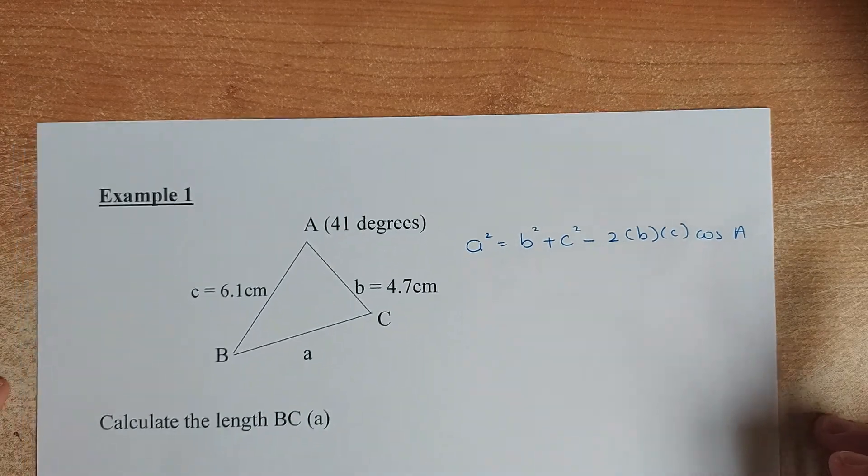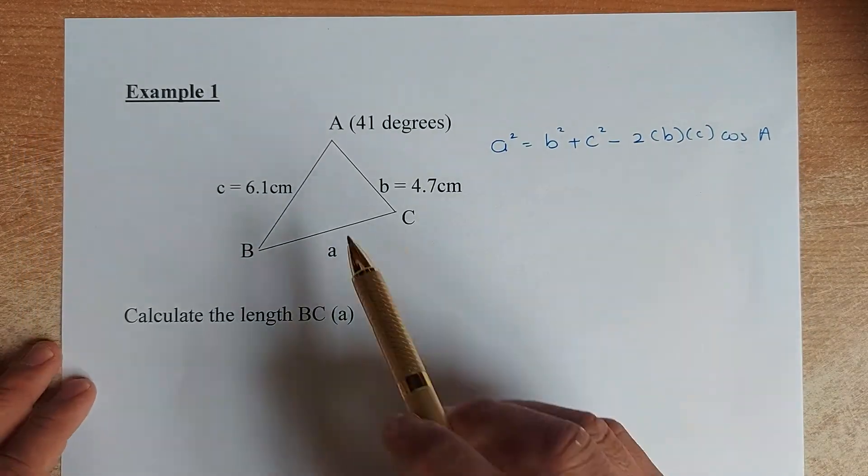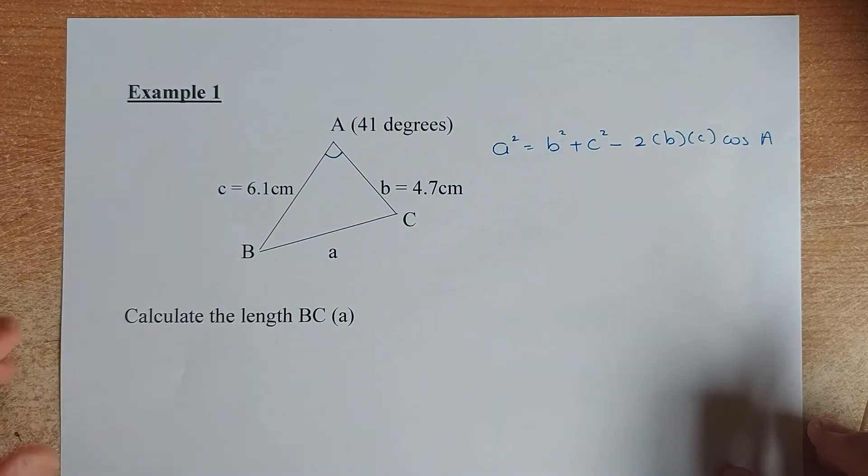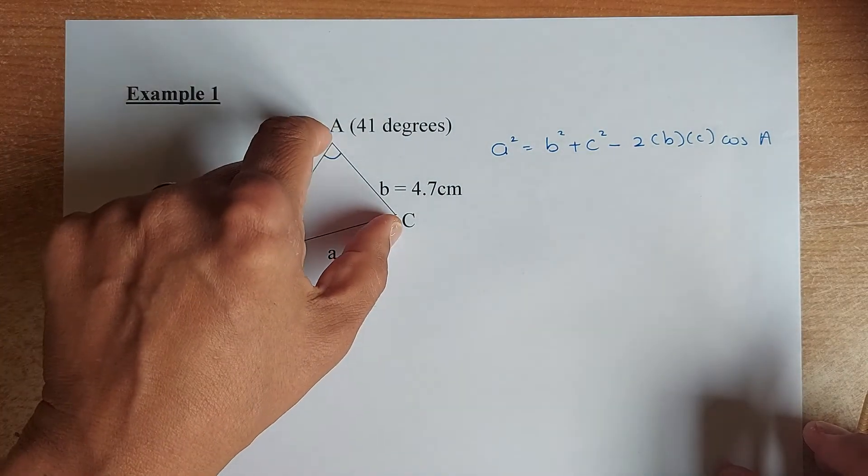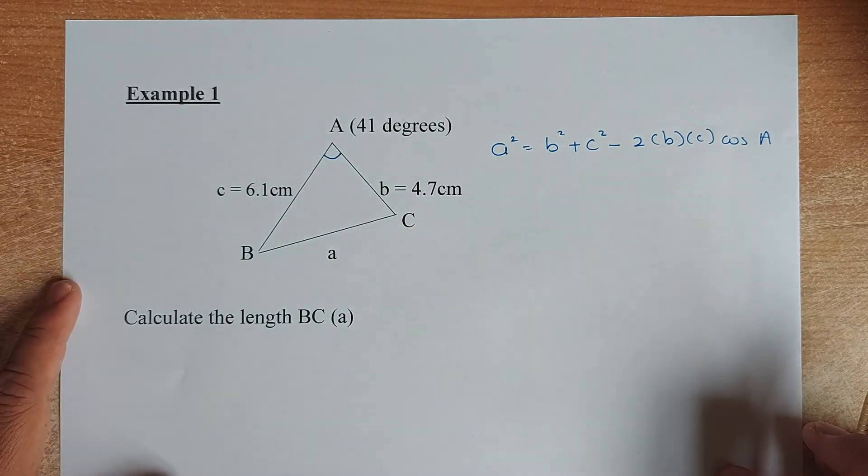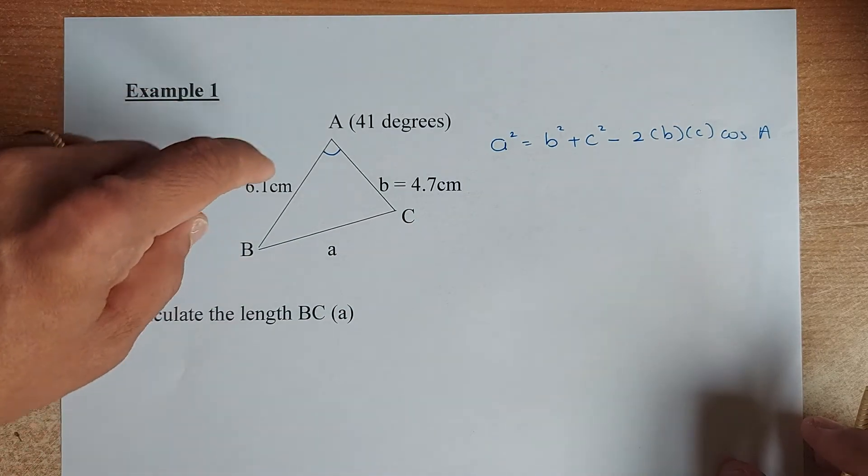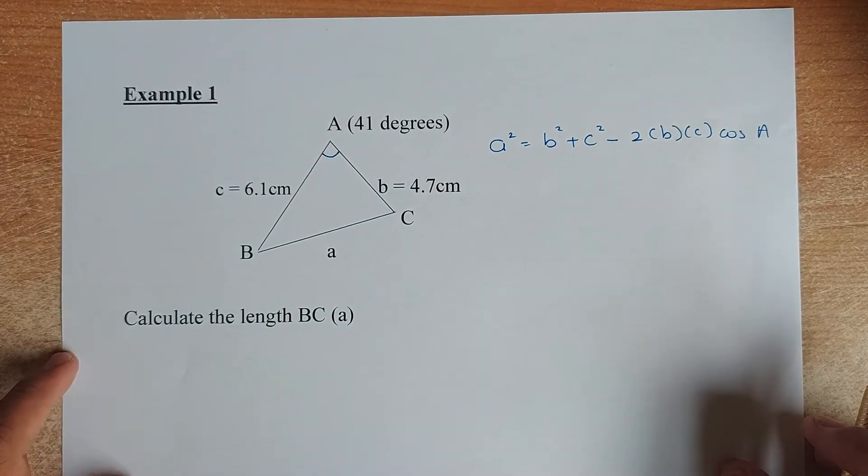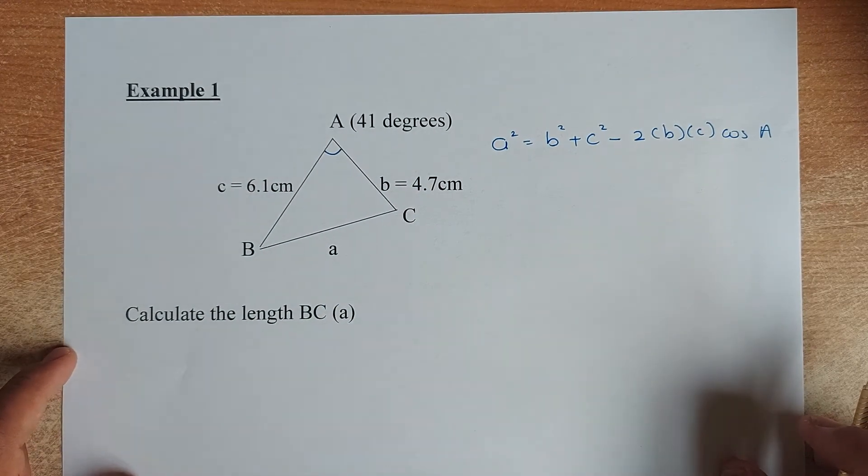The first example, you have the angle A is 41 degrees. And c is 6.1cm. And b, the length of b is 4.7cm. So you have three known values. 41 degrees, 6.1 and 4.7. So rule 1 is acceptable.